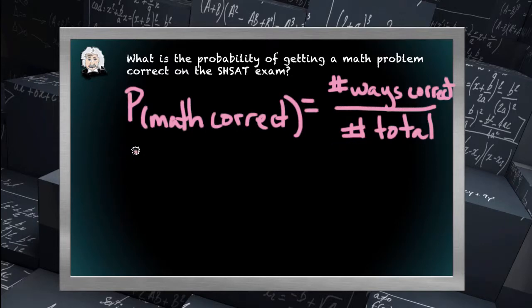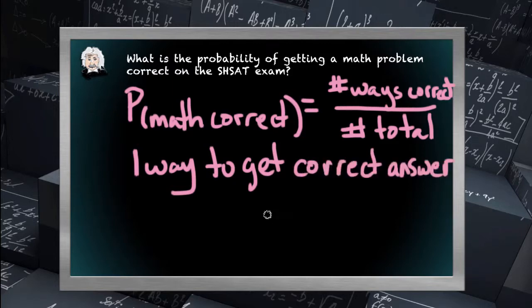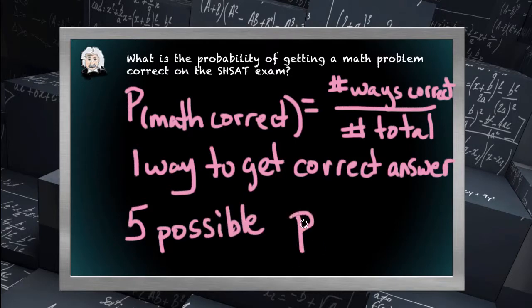There is only one way to get the correct answer. Each correct answer is unique. And if you're familiar at all with the SHSAT math problems, there are five multiple choice answers: A, B, C, D, E. Which means in total there are five possible answer choices. Which means the probability of getting the math problem correct is one divided by five. It is just one-fifth.